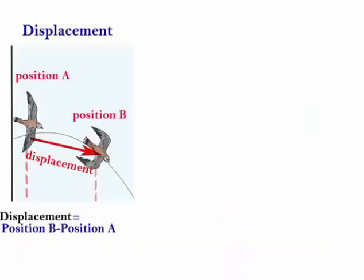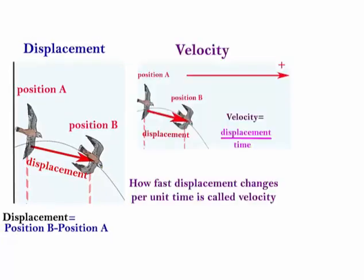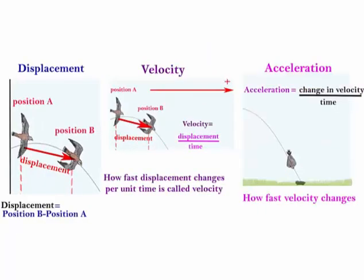So let's review. We talked about displacement, which is the change in position. If we want to know how fast the Kestrel flies, we're talking about a change in displacement, which is velocity. And now, if this velocity changes, then we have acceleration.